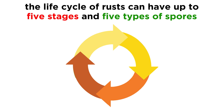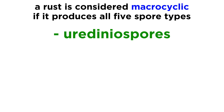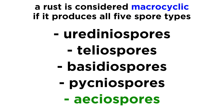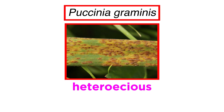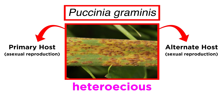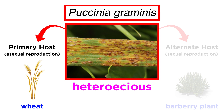Rust fungi can have quite an interesting life cycle with up to five stages and five different types of spores. A rust is considered macrocyclic if it produces all spore types. These are urediniospores, teliospores, basidiospores, pycniospores, and aeciospores. Let's describe the life cycle and spore types of the well-studied Puccinia graminis, or stem rust. Puccinia graminis is heteroecious and has a primary host where asexual reproduction occurs, and an alternate host where sexual reproduction occurs. Its primary host is wheat, and its alternate host is the barberry plant. Barberry is considered the alternate host because the rust can reproduce with or without its presence.